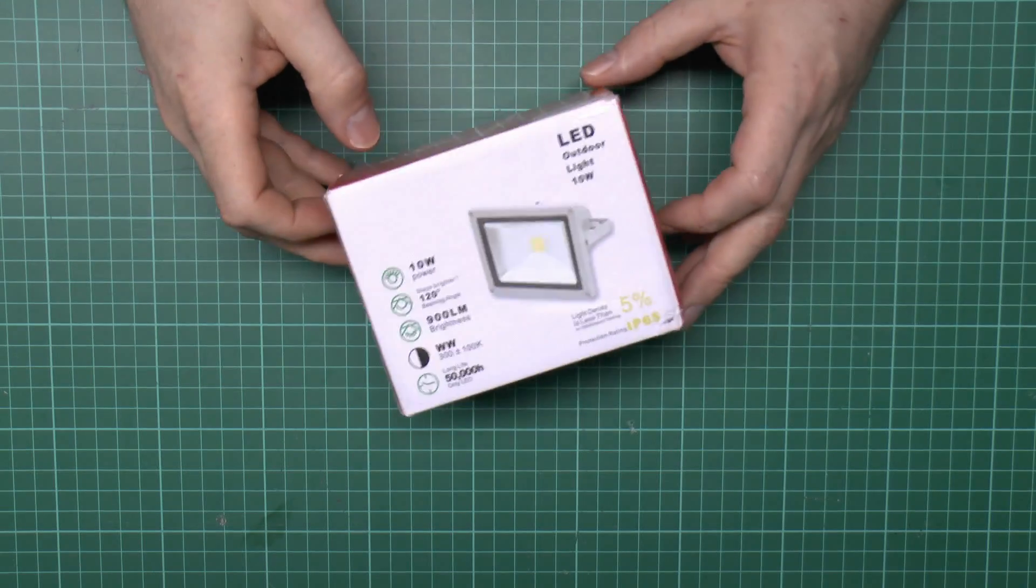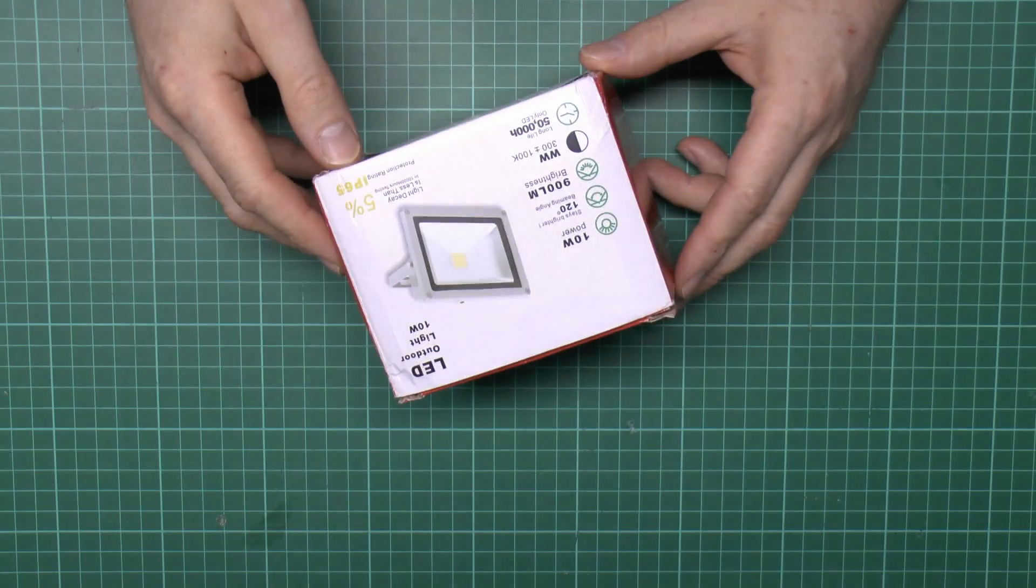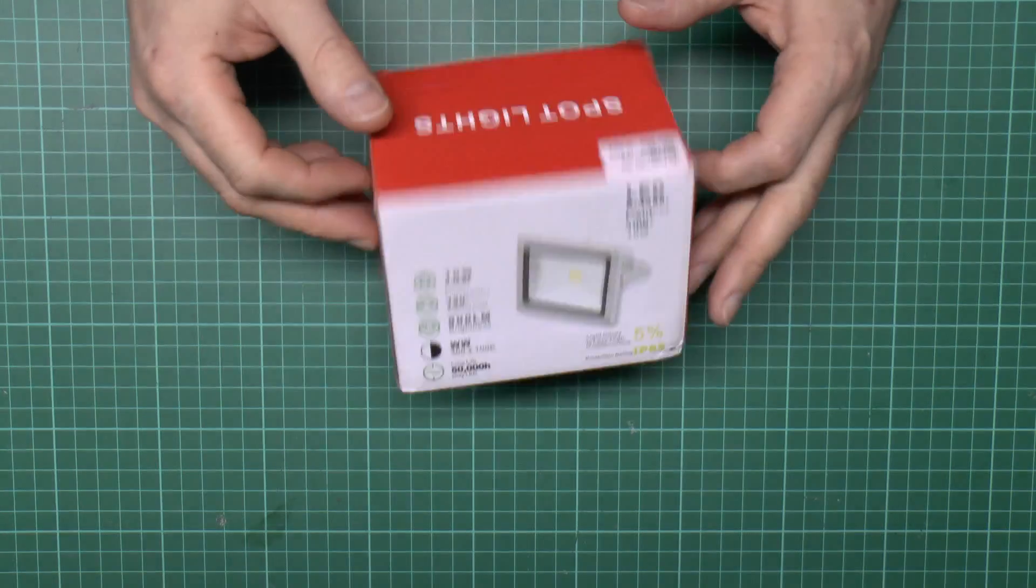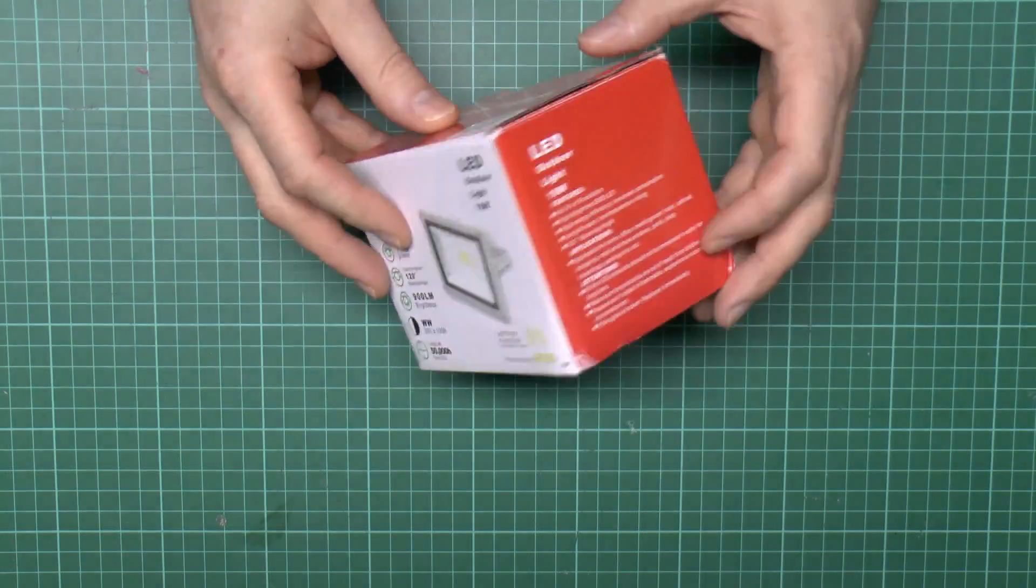Here's this particular one. It comes in this box with a red top that says Spotlights and has a little label. These are actually 10W ones. Whether they're exactly 900 lumens is another story, but I have bought these before so I do know these are the decent variety.